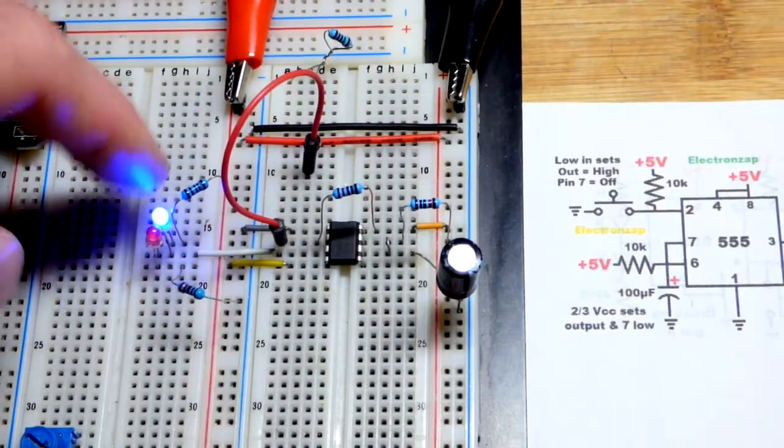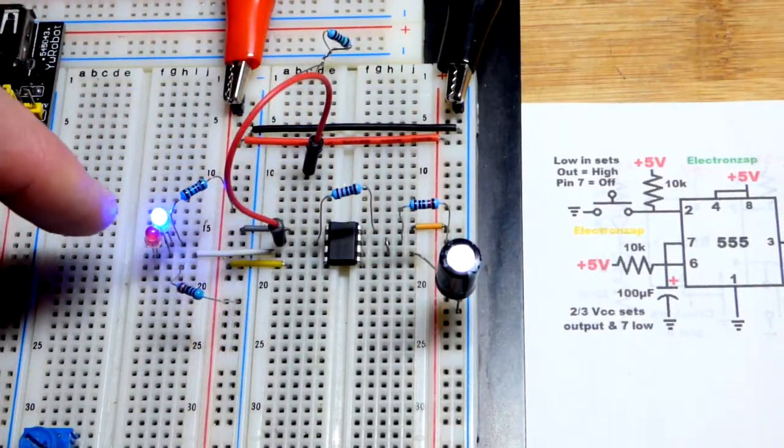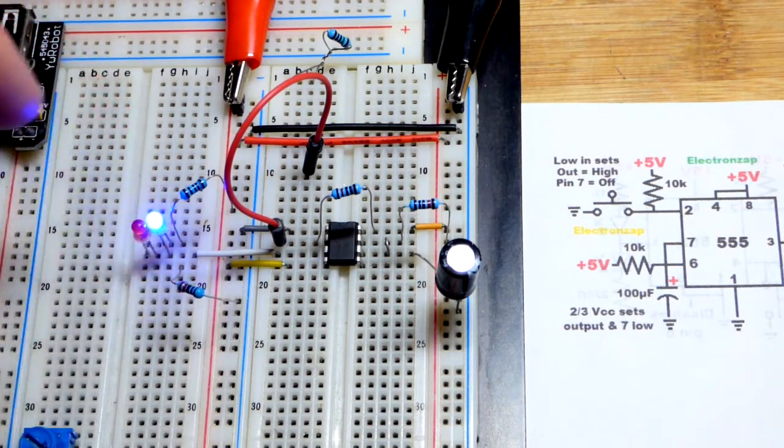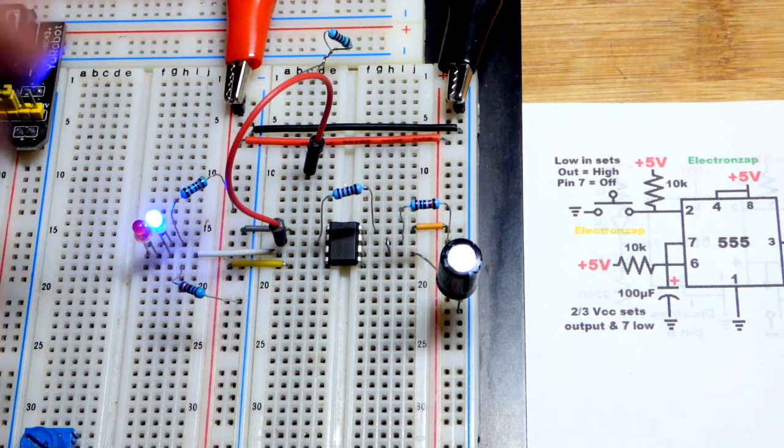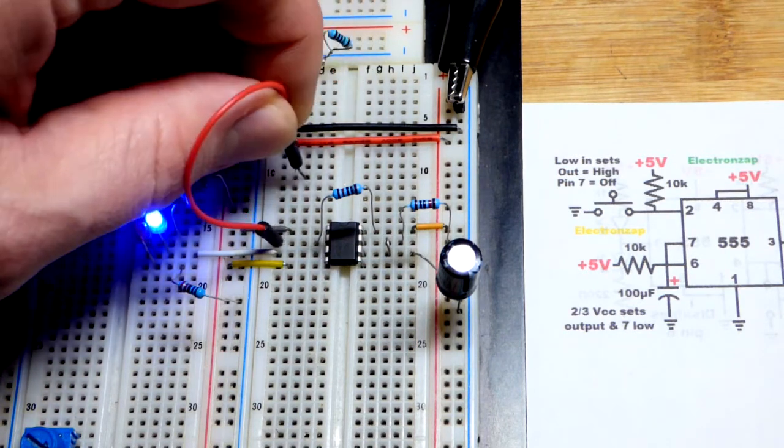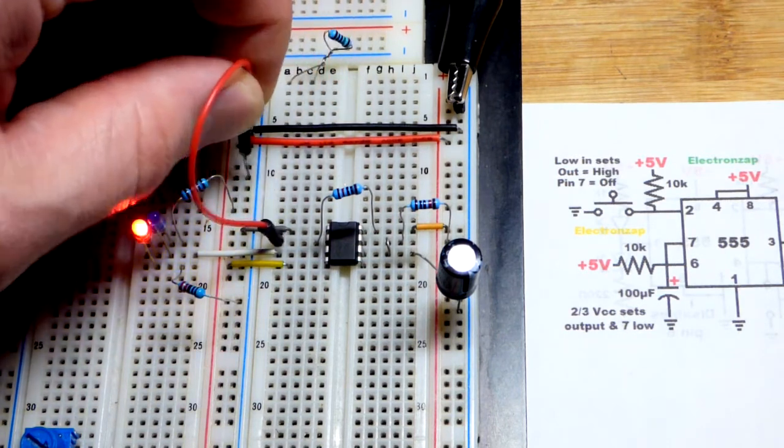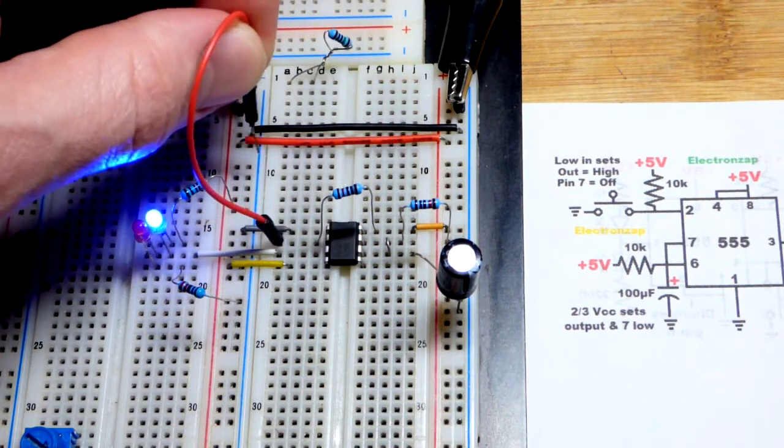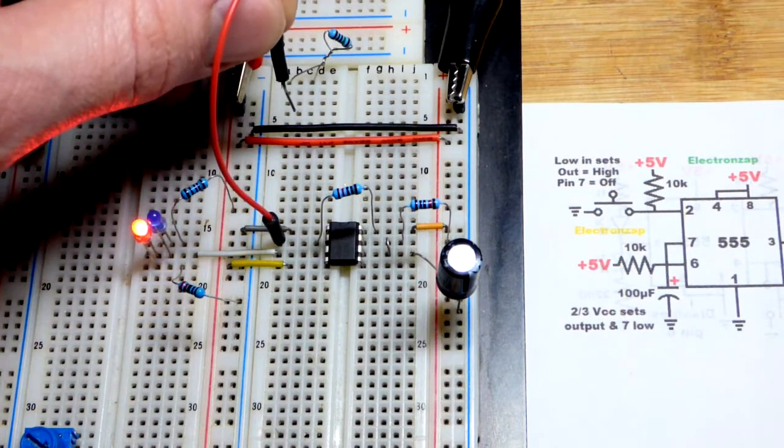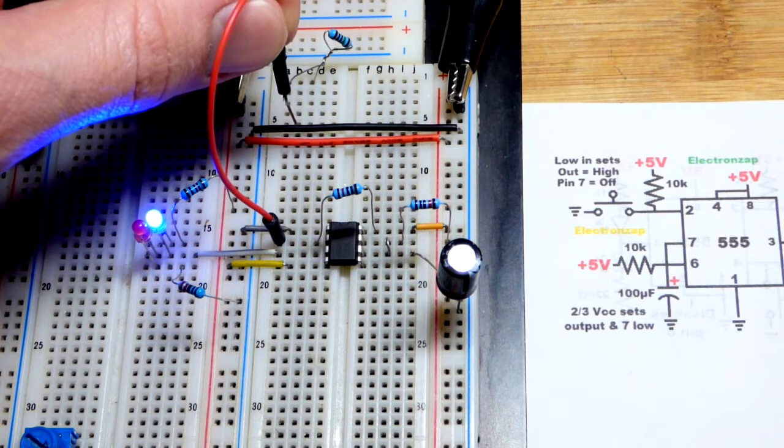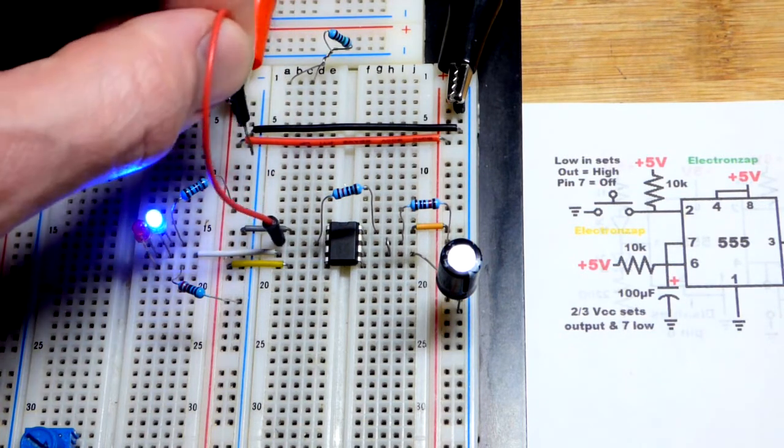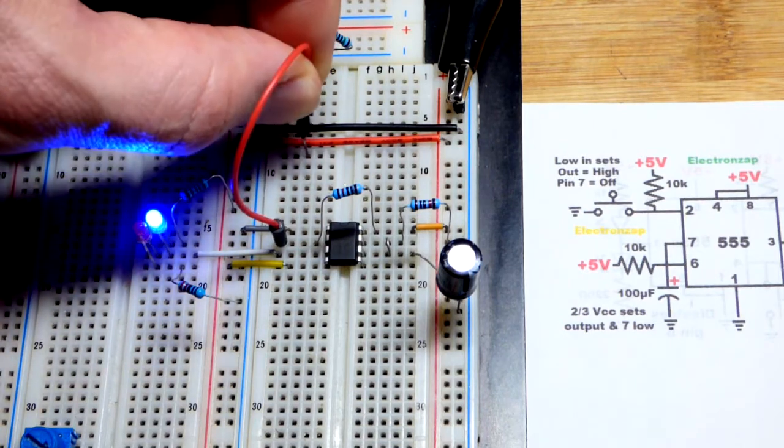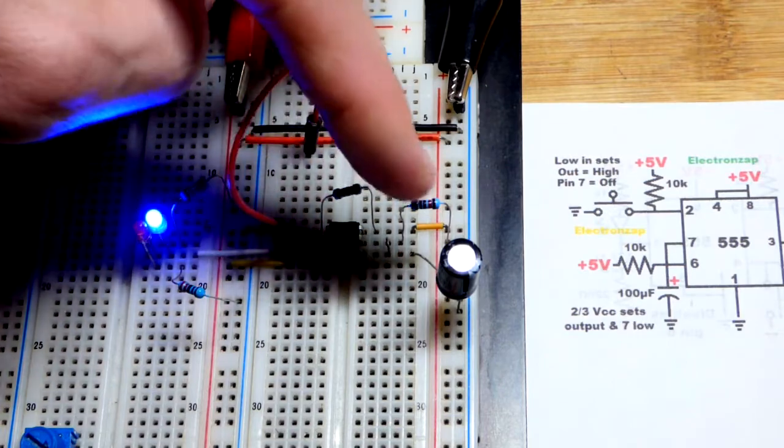So now in this video we're going to look at the 555 timer in monostable mode. So right now it's in its stable mode, its one mode of stable, and that is low. If I give a low pulse to the trigger pin based on the capacitor and timing resistor, I have somewhere about a second, the output is high and then it goes back to low. So it stays low, that's why it's stable, until I force it high. It's not stable high because it flips back to low after the time that I set.